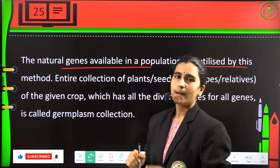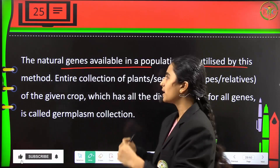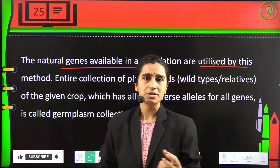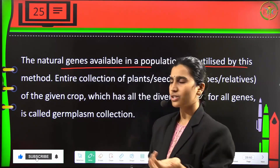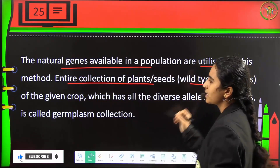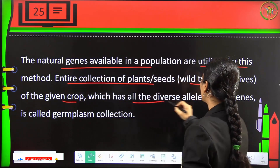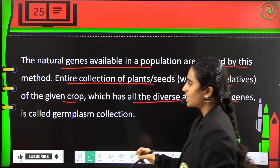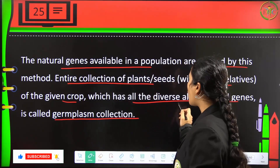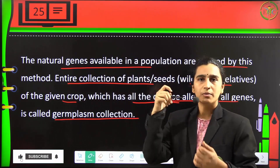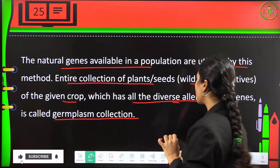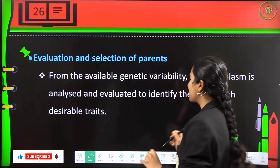Natural genes available in the population are utilized by this method. The entire collection of plant seeds, wild types, or relatives of a given crop has diverse alleles of all the genes, and this is called the germplasm collection. We collect all diverse genes present in the wild crop and its relatives — this is germplasm collection.